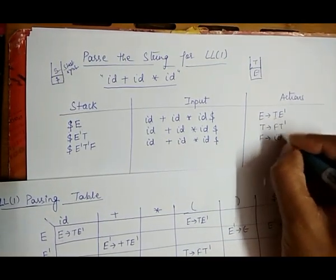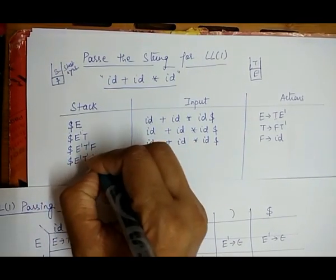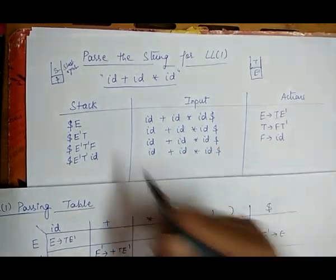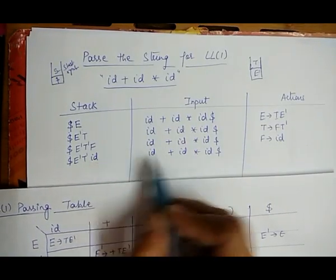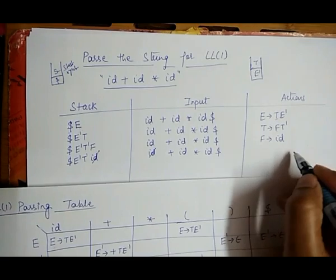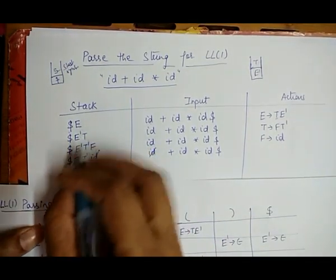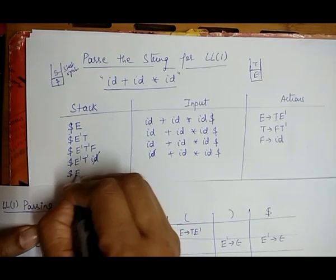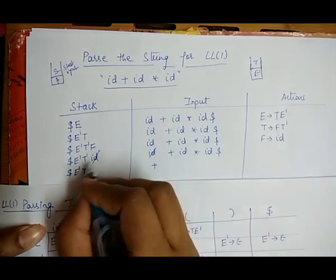The top of the stack is F and the input is id. From the table, F on seeing id: action is F → id. So in place of F we write id. Input is id plus id into id dollar. Now the top of the stack is id and the input is also id — they match, so we pop id. The stack becomes: dollar, E', T', and the input becomes: plus id into id dollar.